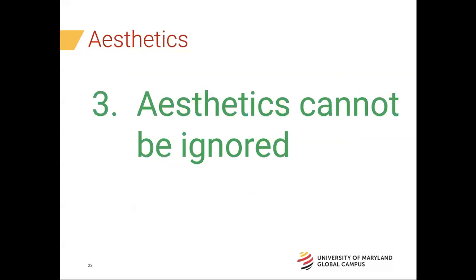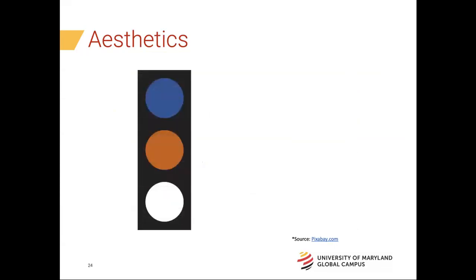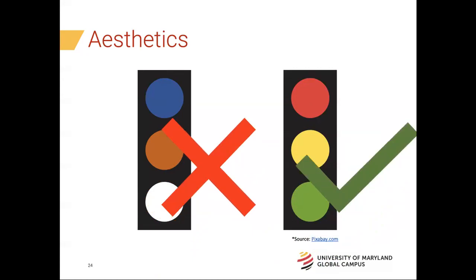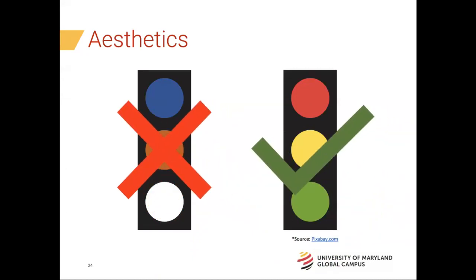Next: aesthetics — that cannot be ignored. Whether it's size, colors, or anything of that sort, aesthetics is very important. For example, if you put up a picture of a traffic light, what's wrong with using the wrong colors? In most countries it would be red, yellow, and green — so you need to use the right colors, otherwise you're not putting up the right picture. Also, be careful with 3D. People get carried away with 3D, but it can lead to occlusion — one data series hiding another — making you think one series is more important because it's in front.